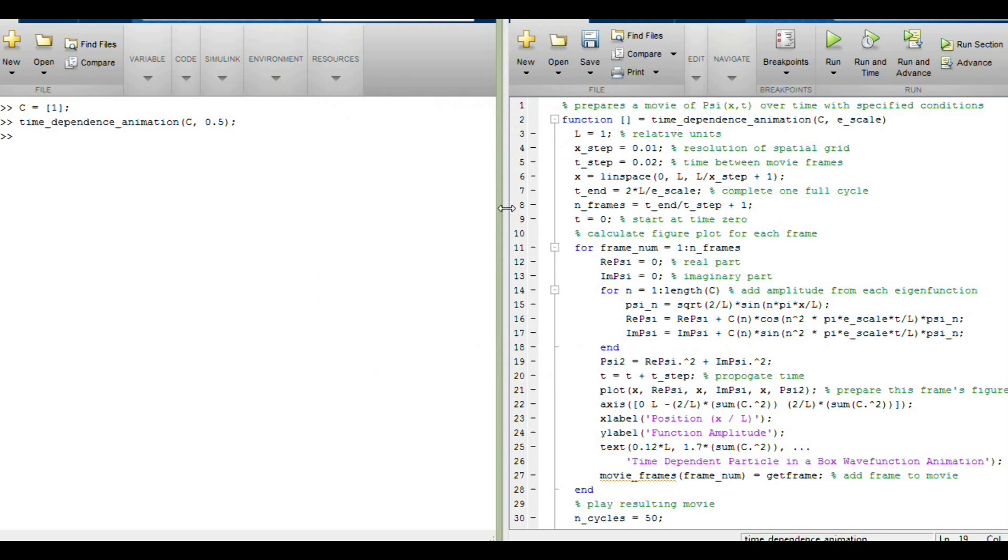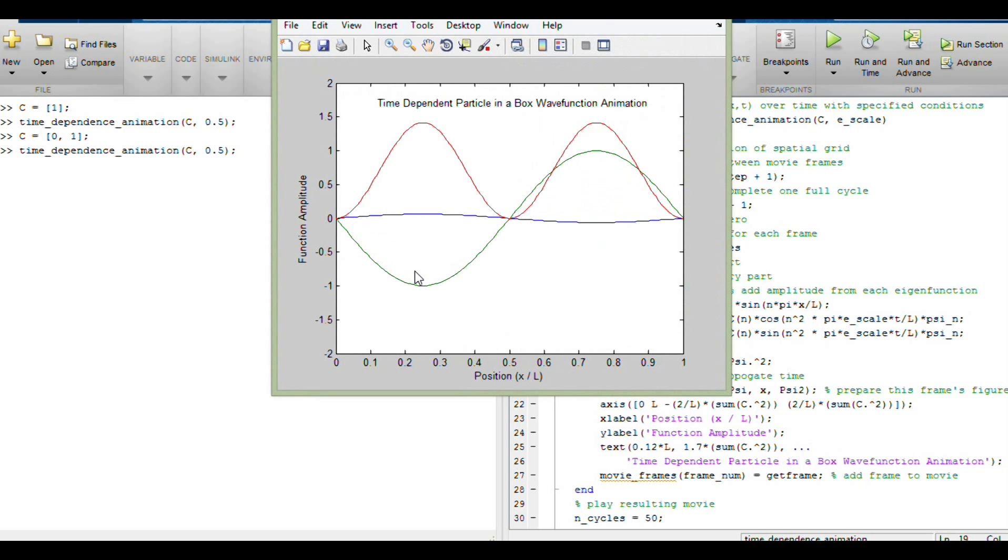So that's the first eigenstate. Then let's instead go to the state n equals 2, where we're entirely in the second eigenfunction. And this time what we're going to see is we have, again, the two peaks in the probability density, but the energy this time is four times greater, so you're going to notice that this wave function is going back and forth four times faster than the previous one was. So this frequency is four times greater than for the ground state, because its energy is four times higher.